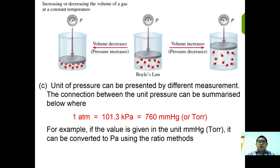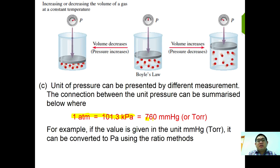The unit of pressure can be represented by different measurements. One atmosphere equals 101.3 kilopascals, which equals 760 millimetres of mercury. If the pressure value is given in millimetres of mercury, it can be converted to pascals using the ratio method. That is all for the introduction to Boyle's law.